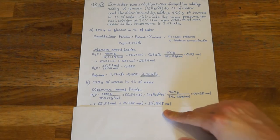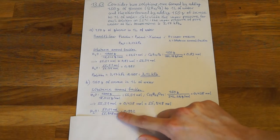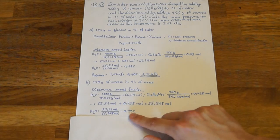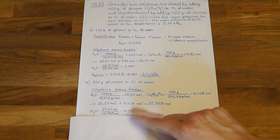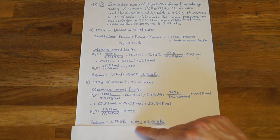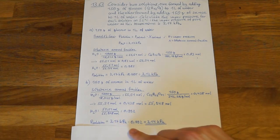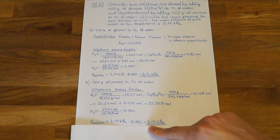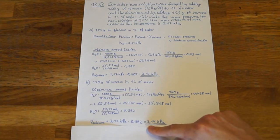To calculate the substance amount fraction, we divide the moles of water by the total amount of moles, which is 55.948. The substance amount fraction of water in this solution is 0.992. Substituting into Raoult's law: 3.17 kilopascal multiplied by 0.992 equals 3.14 kilopascal. So in this solution, we have a vapor pressure of 3.14 kilopascal.